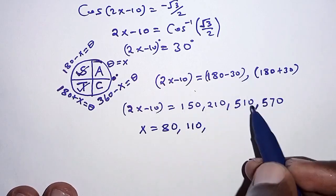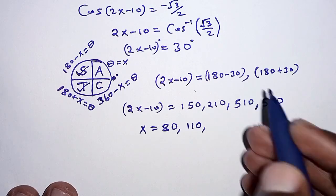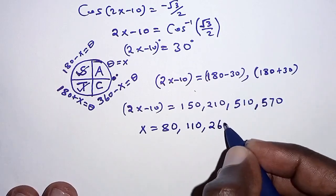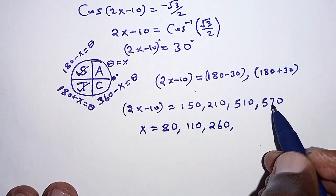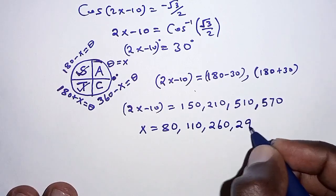Next one, cross here so that we have 520, 520 divided by 2, that is 260. And lastly, we have 580, 580 divided by 2, we have 290.